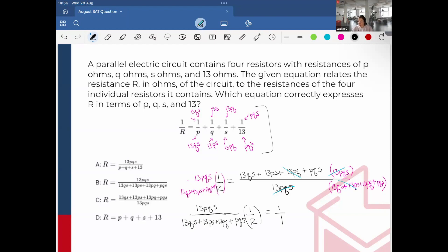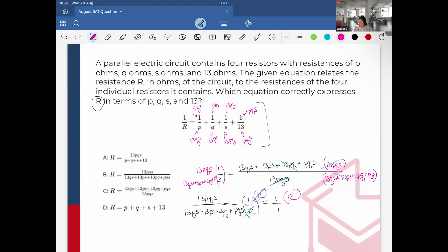And then remember, I want everything in terms of R. So the final step is that I'll just multiply this equation here, each side by R. And then we see that this would just cancel, and I would be left with the final equation, which I'll put in green, 13PQS divided by 13QS plus 13PS plus 13PQ plus PQS is all equal to R. And that matches correct choice B. So B would be the answer.